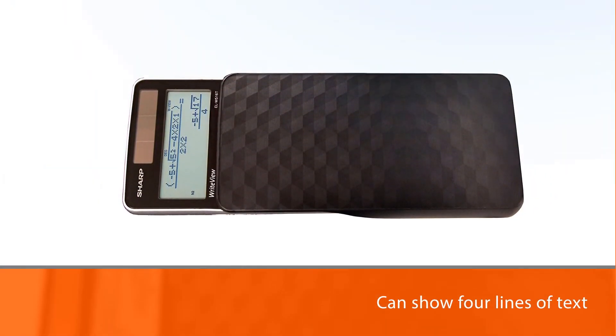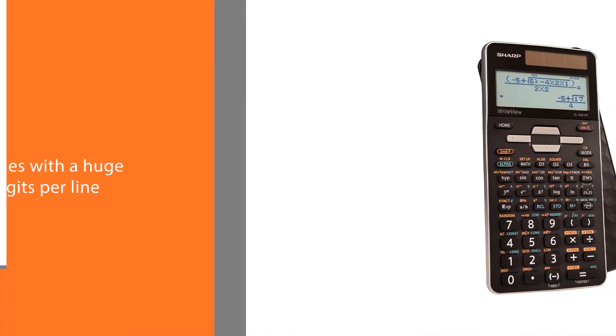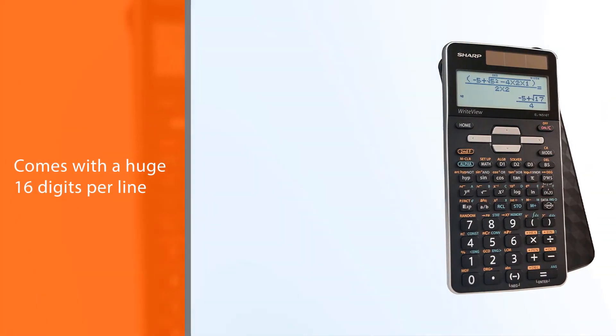The calculator's display can show four lines of text with a huge 16 digits per line.